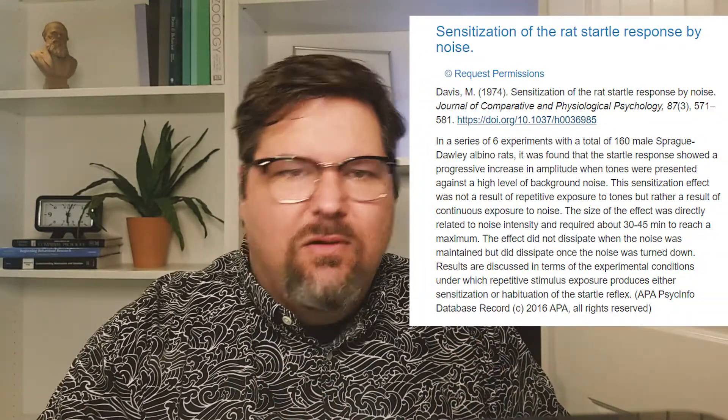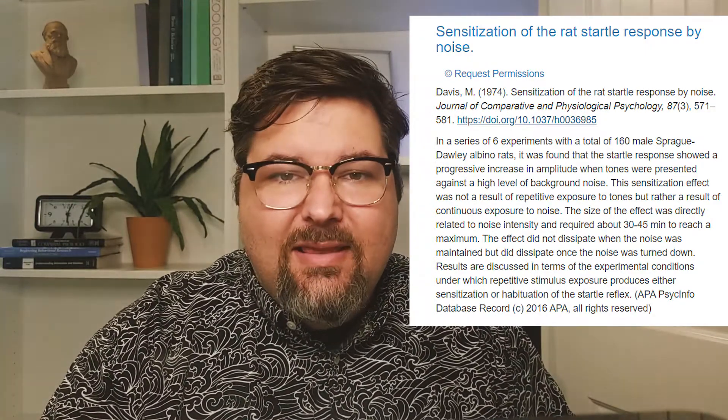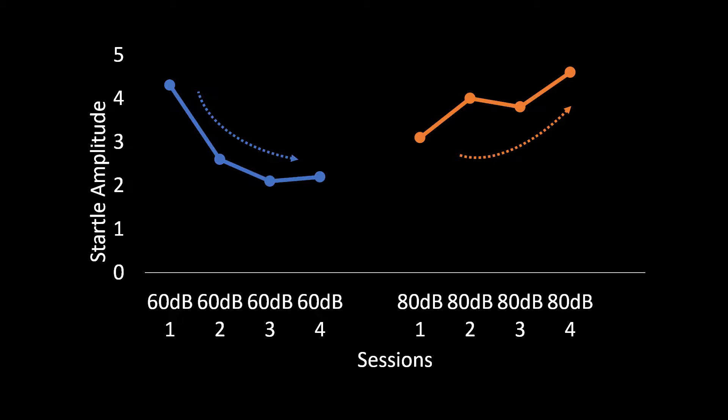Consider the following experiment by Davis in 1974. Davis presented rats with a tone several times, but varied the amount of white noise in the background. In one group of rats, the background noise was relatively quiet, measured at 60 decibels. For another group, the background noise was much louder, at 80 decibels. When the background noise was low, the animals showed rapid habituation of their startle response. But when the background noise was high, the same tone stimulus produced increased responding — that is, sensitization.